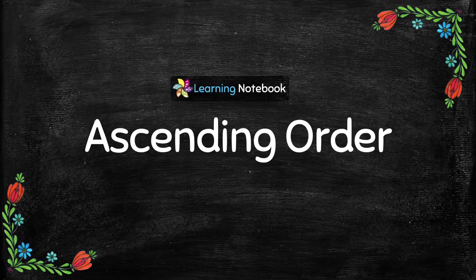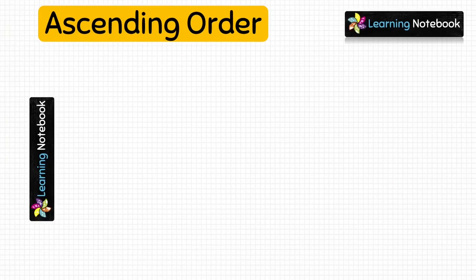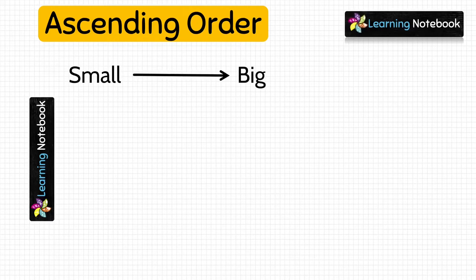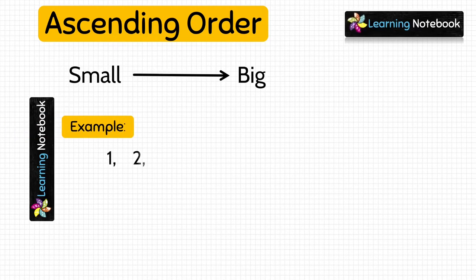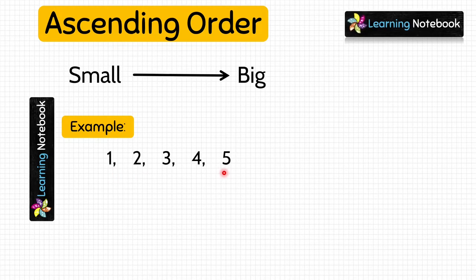Let's start and first understand the meaning of ascending order. Ascending order means arranging numbers from small to big. For example, 1, 2, 3, 4, 5. Look at these numbers — we have arranged them from small to big. 1 is the smallest number and 5 is the greatest number.